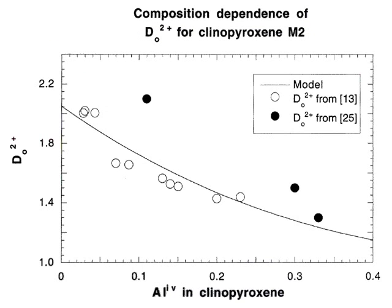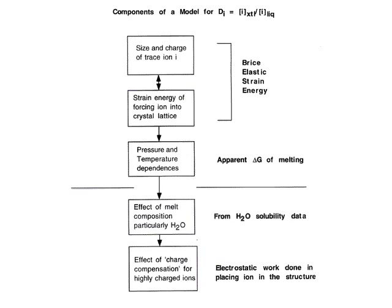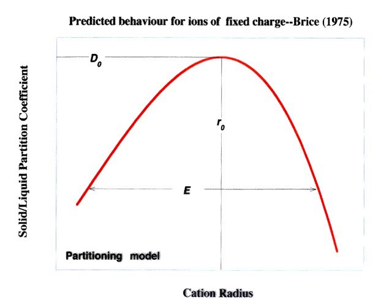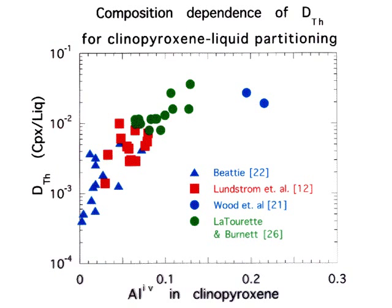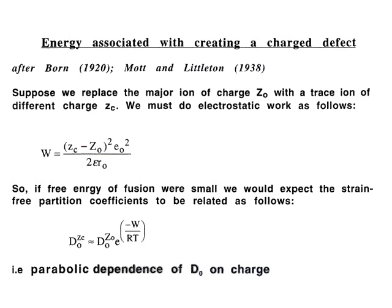In summary, we treat the variation of D₀ with pressure and temperature like a melting reaction, and ignore other compositional effects, using simple 6- and 12-oxygen units for the melt. If we look at rare earth partitioning between clinopyroxene and liquid, treating it as a melting reaction gives us a partition coefficient D₀ that should depend on the heat of fusion, the magnesium content of the melt, and the crystal. For garnet, we end up with something very similar.